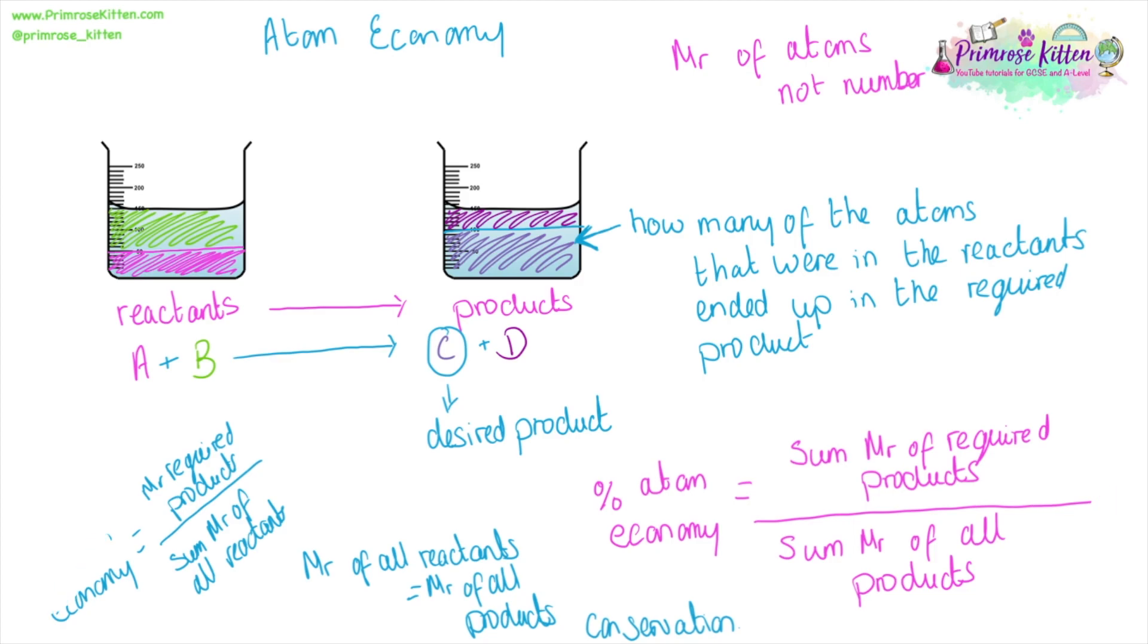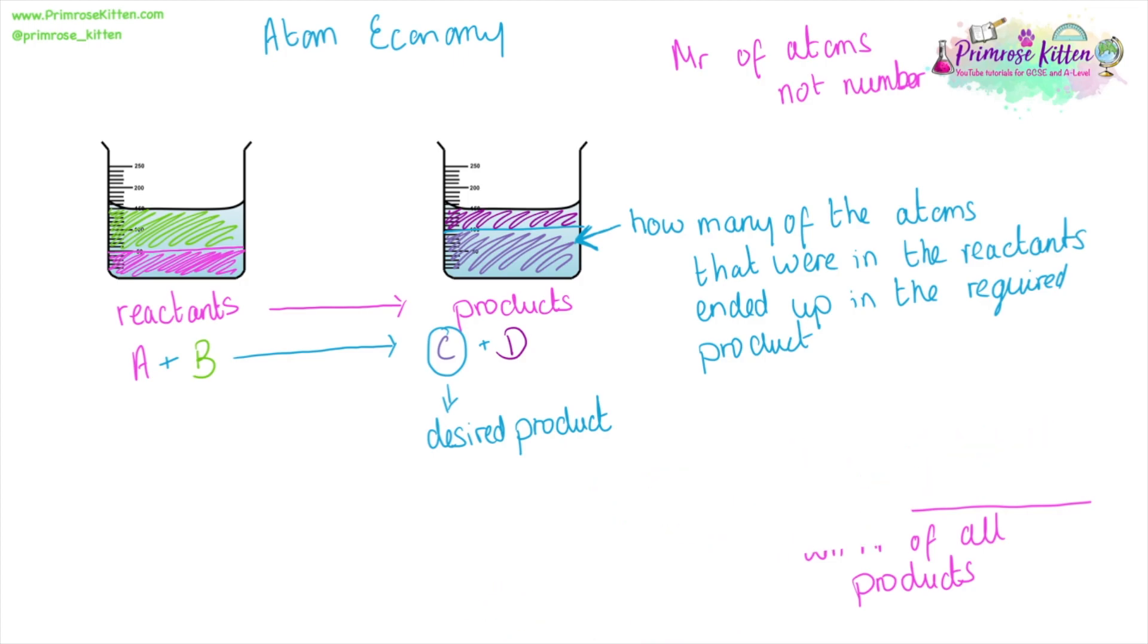Atom economy can sometimes be confused with percentage yields because they are often taught at the same time. Lots of questions combine them as a joint question, and the equations do look pretty similar. But these are different things. They are subtly different. The equations and the explanation sometimes look very similar and get confused, but they are different.